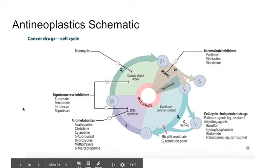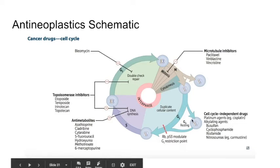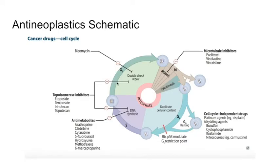If you understand this framework, it'll make things a lot easier: either block nucleotide synthesis, block DNA replication, block cellular division, or block growth signals. Looking at the schematic from First Aid — there's the G1 phase; alkylating agents are cell cycle independent. Antimetabolites work in the S phase. Topoisomerase inhibitors work in S and G2. Microtubule inhibitors work in the M phase.